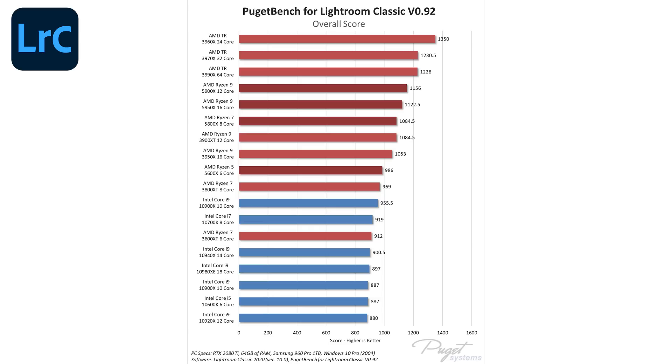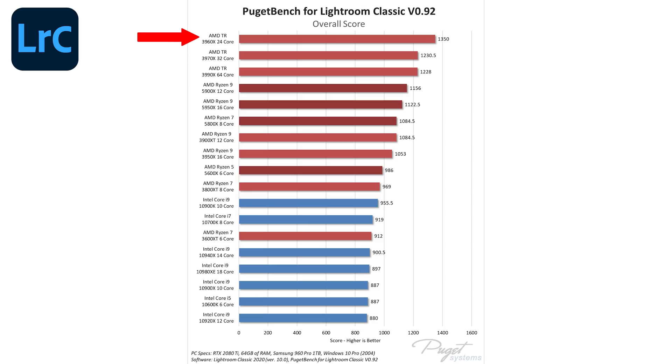Let's move on to Lightroom Classic. A quick spoiler: AMD is going to be on top in all of these programs. Previously there were reasons to go with Intel for active tasks like scrolling, but not anymore. AMD takes a solid lead in Lightroom Classic — the 8-core 5800X beats Intel 10900K by 14%, and the 5900X beats Intel by 21%. Threadripper processors are still the absolute best, but for similarly priced Intel vs AMD, Ryzen is the better choice.